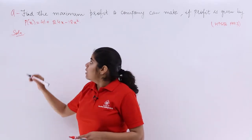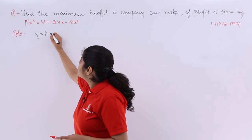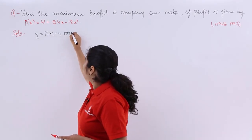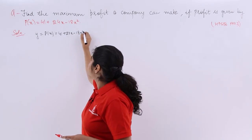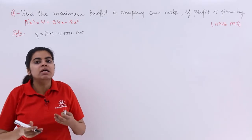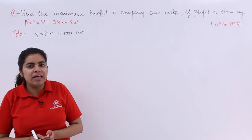Let y = P(x) and let it be 41 + 24x - 18x². Now my first task is to solve it with the help of first derivative test. Let me find out the first derivative of y.